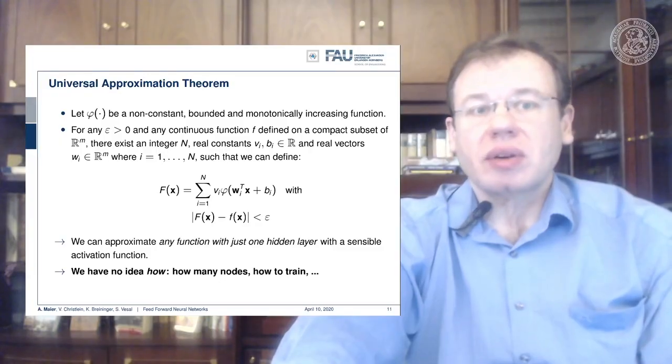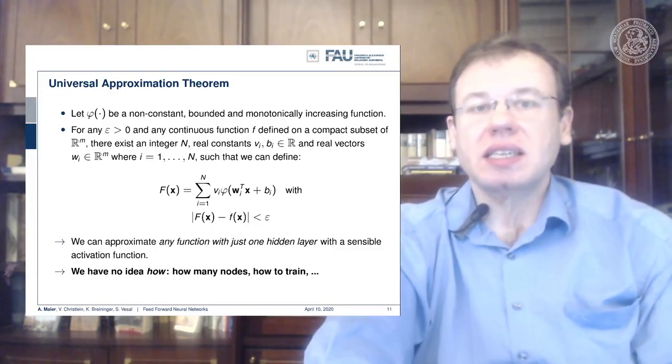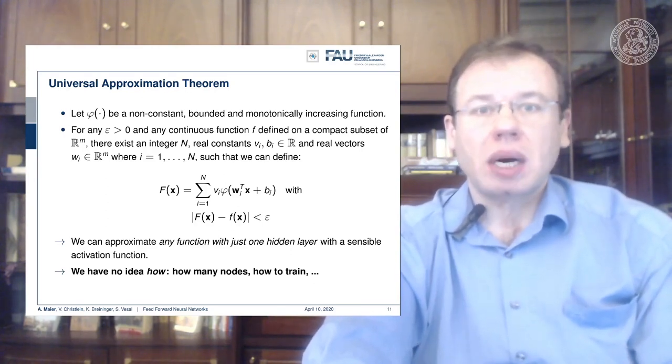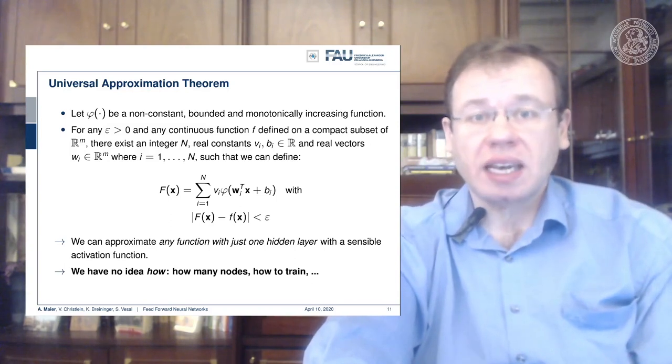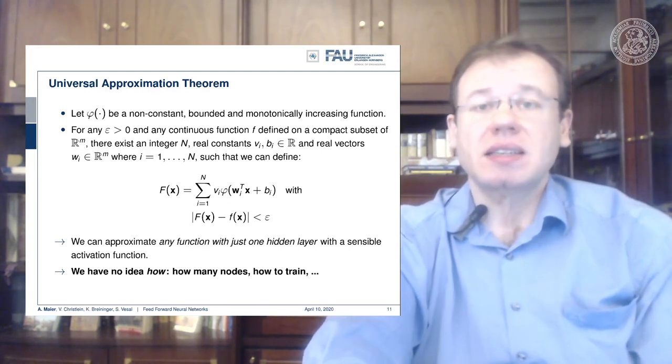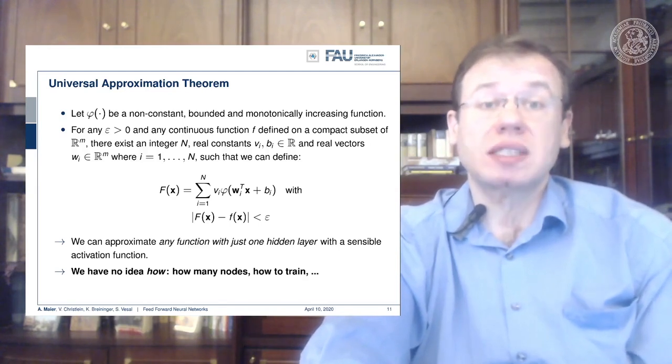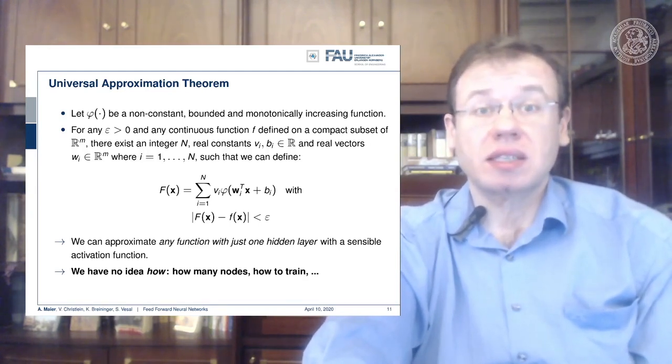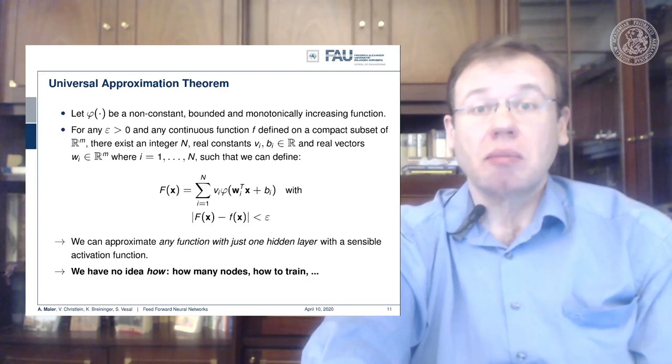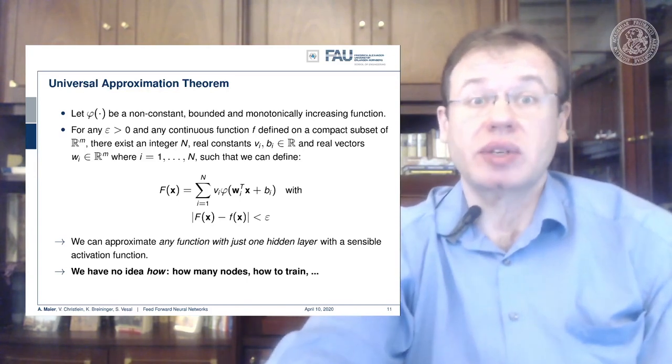Now let's go back to our universal function approximation theorem. So we've seen that it exists. It tells us that we can approximate everything with just a single hidden layer. That's already a pretty cool observation. But it doesn't tell us how to choose n. It doesn't tell us how to train. So there's a lot of problems with the universal approximation theorem. This is essentially the reason why we go towards deep learning. Because we can then build systems that start disentangling representation over various steps. If we do so, we can build more efficient and more powerful systems and train them end to end. So this is the main reason why we go towards deep learning.